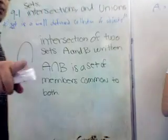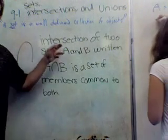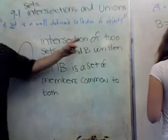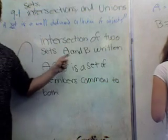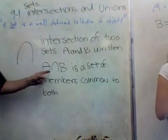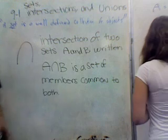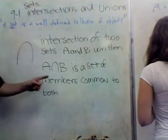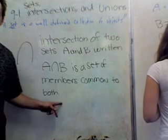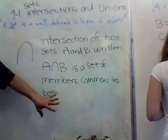Let's go talk about intersection now. Intersection is symbolized by this upside-down U. The intersection of two sets A and B, written A intersect B, is the set of all members common to both — the members that are common to both and nothing else.